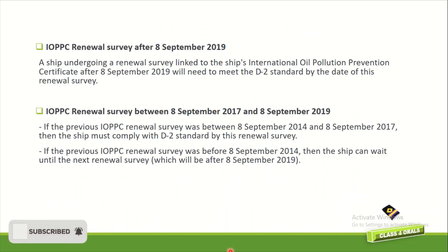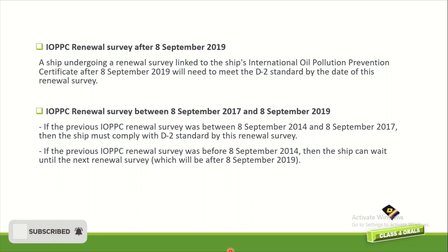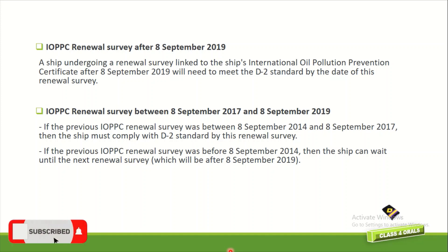For IOPPC renewals after 8th September 2019: a ship undergoing a renewal survey linked to its International Oil Pollution Prevention Certificate after 8th September 2019 will need to meet the D2 standard by the date of that renewal survey. For the IOPPC renewal survey between 8th September 2017 and 2019: if the previous IOPPC renewal survey was taken between 8th September 2014 and 8th September 2017, the ship must comply with D2 by this renewal survey. If the previous IOPPC renewal survey was before 8th September 2014, the ship can wait until the next renewal survey, which will be after 8th September 2019.